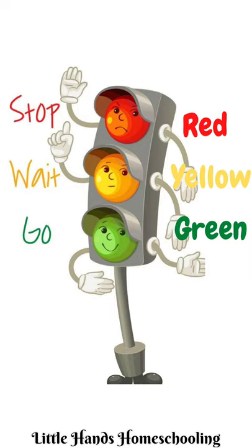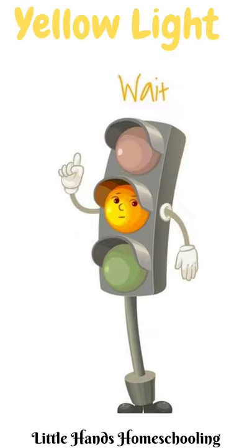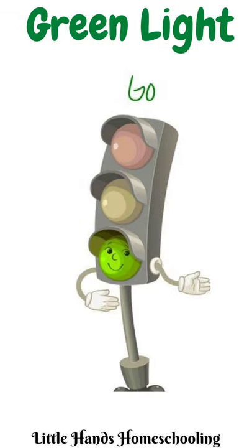Traffic lights or traffic signals are of three colors: red, yellow, and green. When the traffic light is red, red light means stop, yellow light means wait, and green light means go.